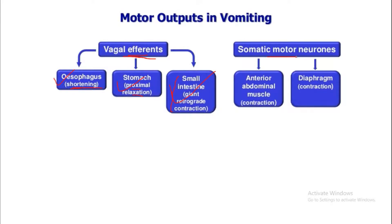The somatic motor neurons — efferents from the vomiting center going to the spinal motor neurons — cause contraction of the anterior abdominal muscles and contraction of the diaphragm. With contraction of the anterior abdominal muscles, abdominal pressure increases, and combined with diaphragm contraction, the gastric contents are expelled.